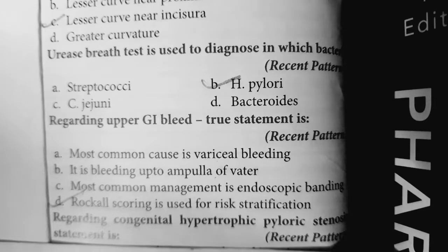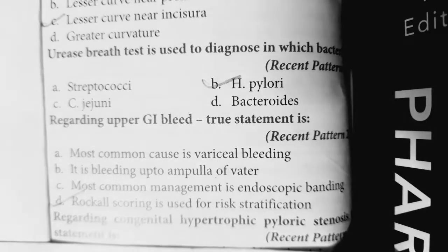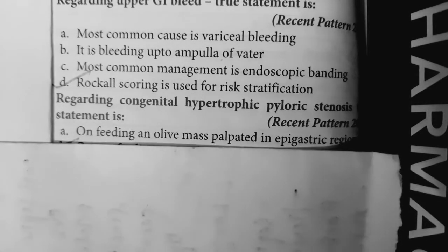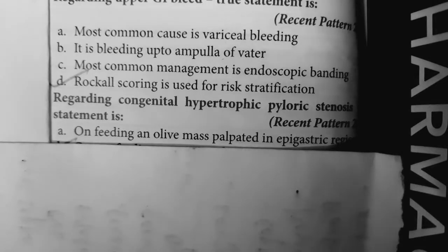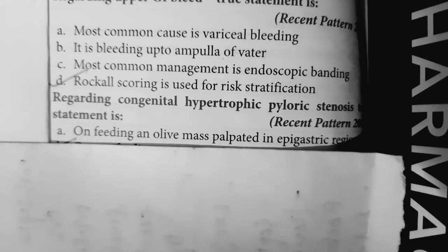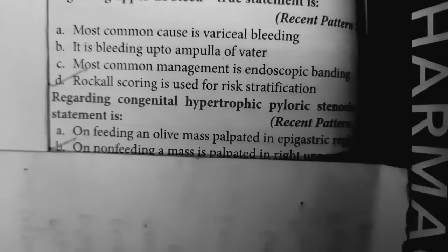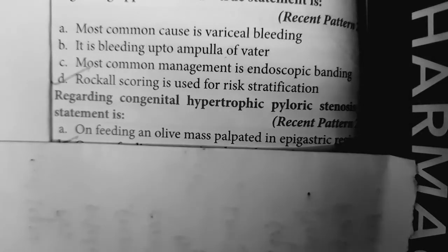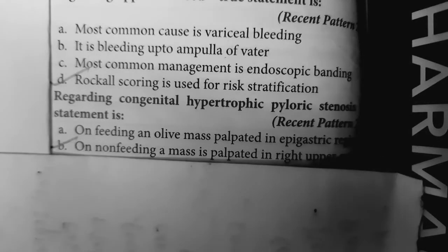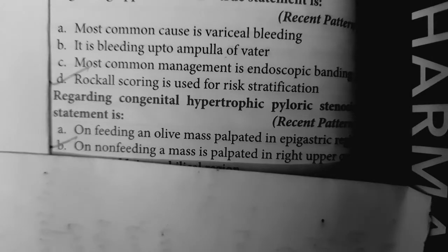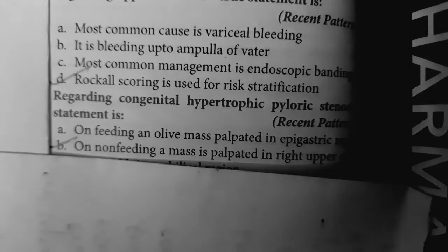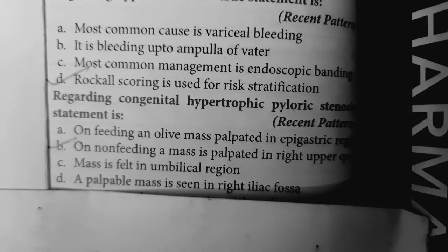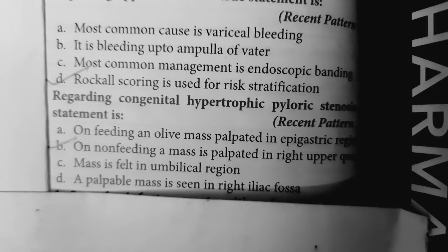Question 5: Regarding congenital hypertrophic pyloric stenosis, the true statement is — on feeding, an olive-shaped mass is palpated in the right upper quadrant, not the epigastric region. On non-feeding, a mass is also palpated in the right upper quadrant. So the mass is felt in the right upper quadrant whether on feeding or non-feeding, not in the umbilical region or right iliac fossa.